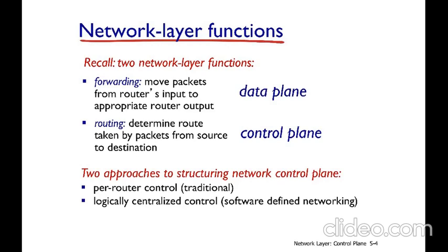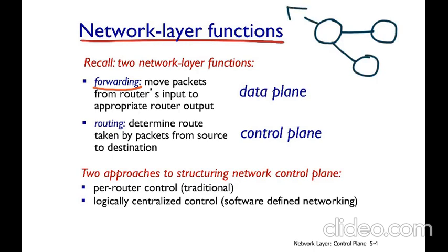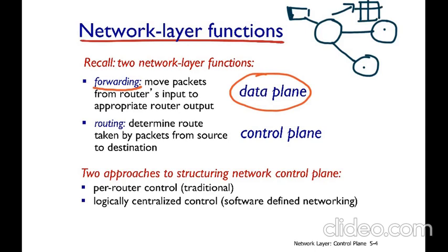There are two network layer functions. The first one is called forwarding. Consider a router that has the possibility of sending an incoming packet from one port to any of two nodes. The forwarding functionality is implemented in the data plane of the node: I check the destination IP of the incoming packet, I compare it with my routing table, and I select an entry in the routing table in order to decide which output to use for forwarding the packet.